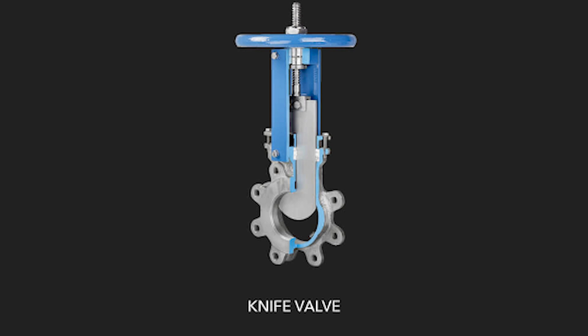The knife gate valve derives from the double disc gate valve. It is not totally enclosed in the body and lifts out of the body upon opening. Knife gate valves are designed to work in harsh environments and to be corrosion resistant, as well as for slicing through viscous liquids.